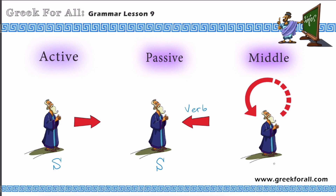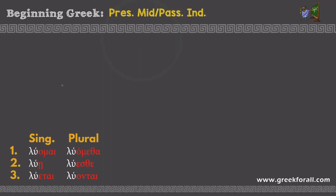The middle voice shows that the subject makes the action, but it will come back to the subject itself and benefit it in one way or another. So we also translate the middle voice actively, with the idea that it will benefit the subject.